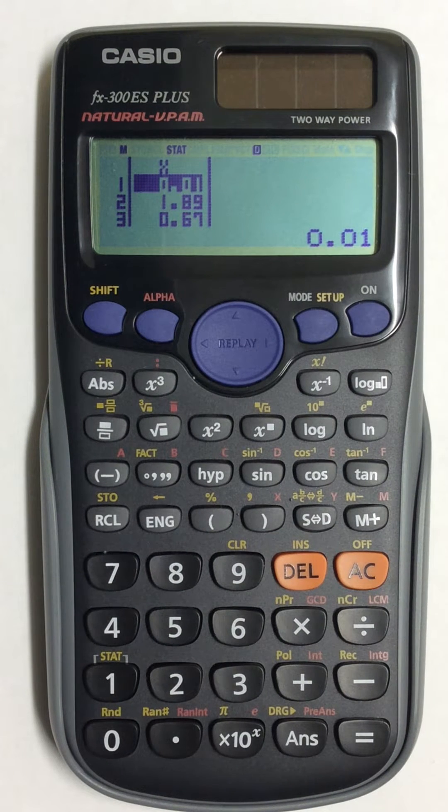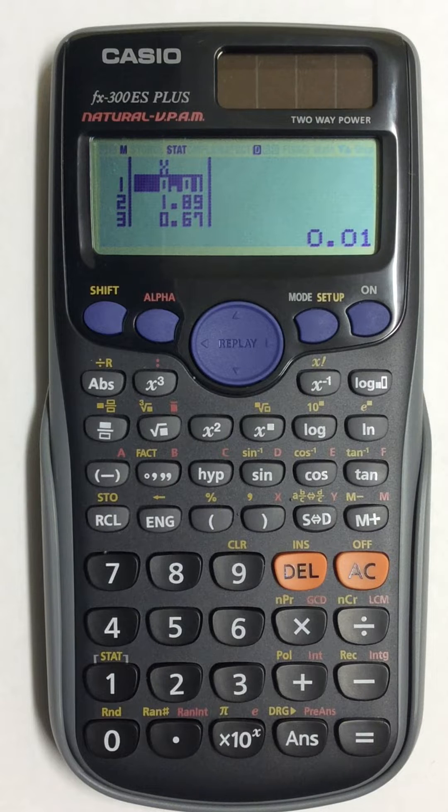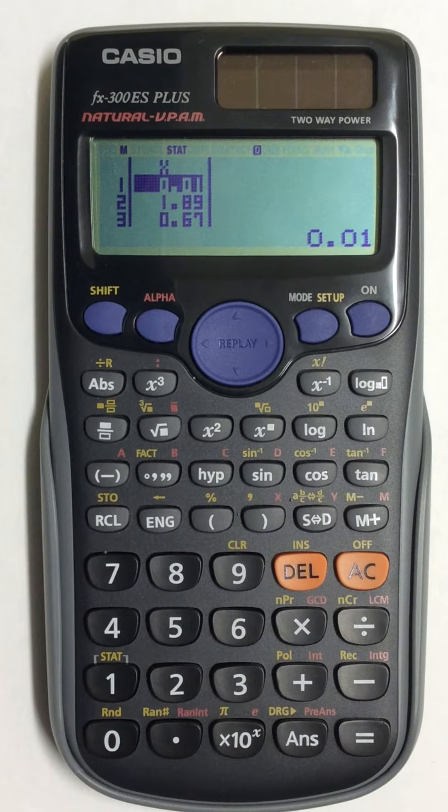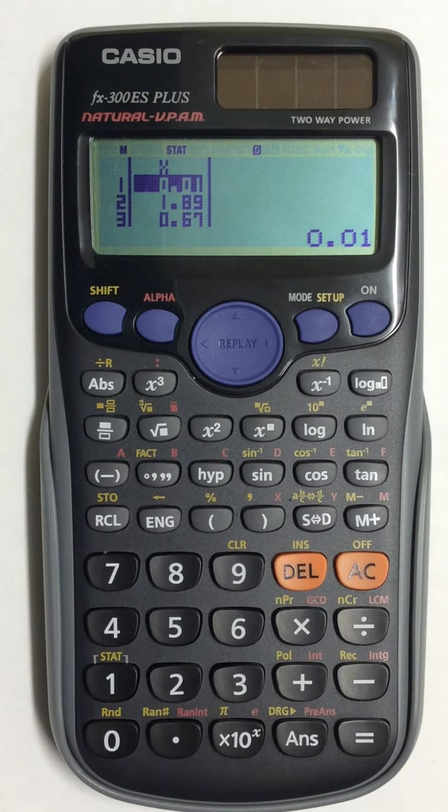In this video I will show you how to find standard deviation and variance for a list of numbers in your Casio 300ES Plus scientific calculator.